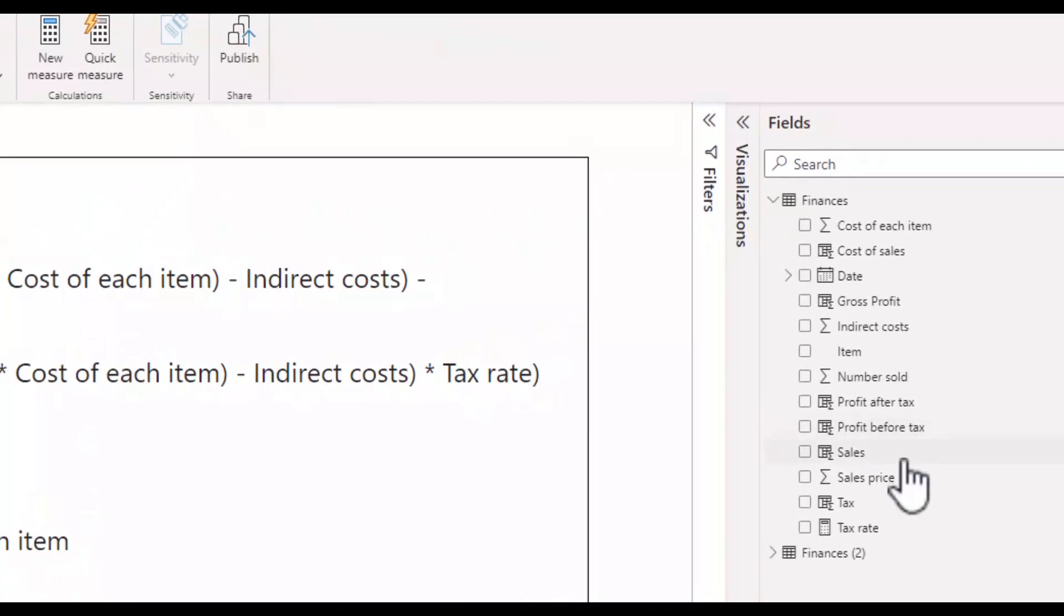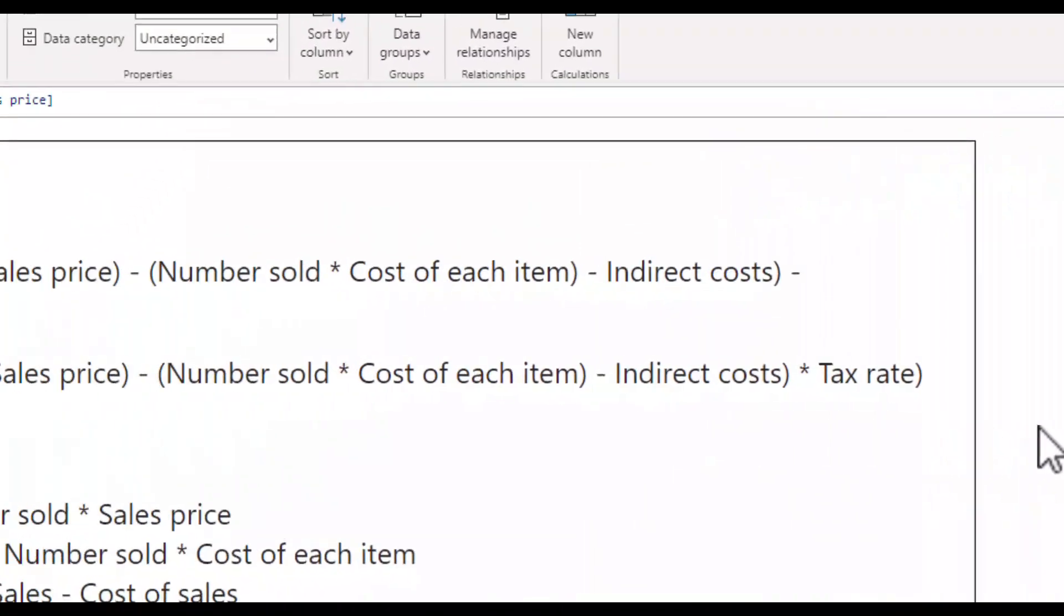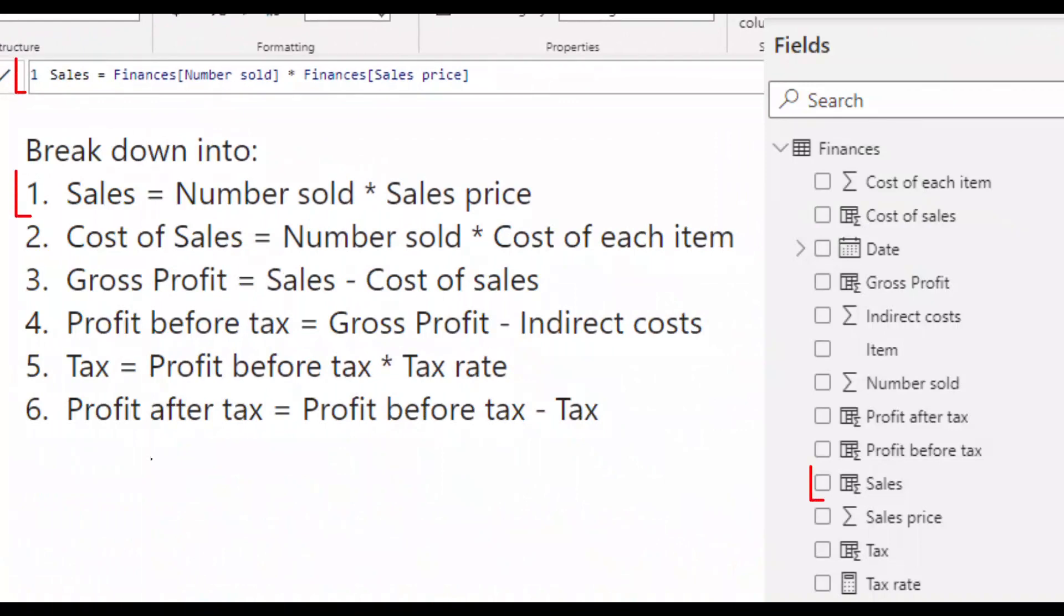So, for sales, in my calculated column, I take the existing field for number sold in the data set and multiply it by the existing field for sales price. For cost of sales, likewise, I take the number sold and multiply it by the cost of each item. Again, taking both figures from my original data set.